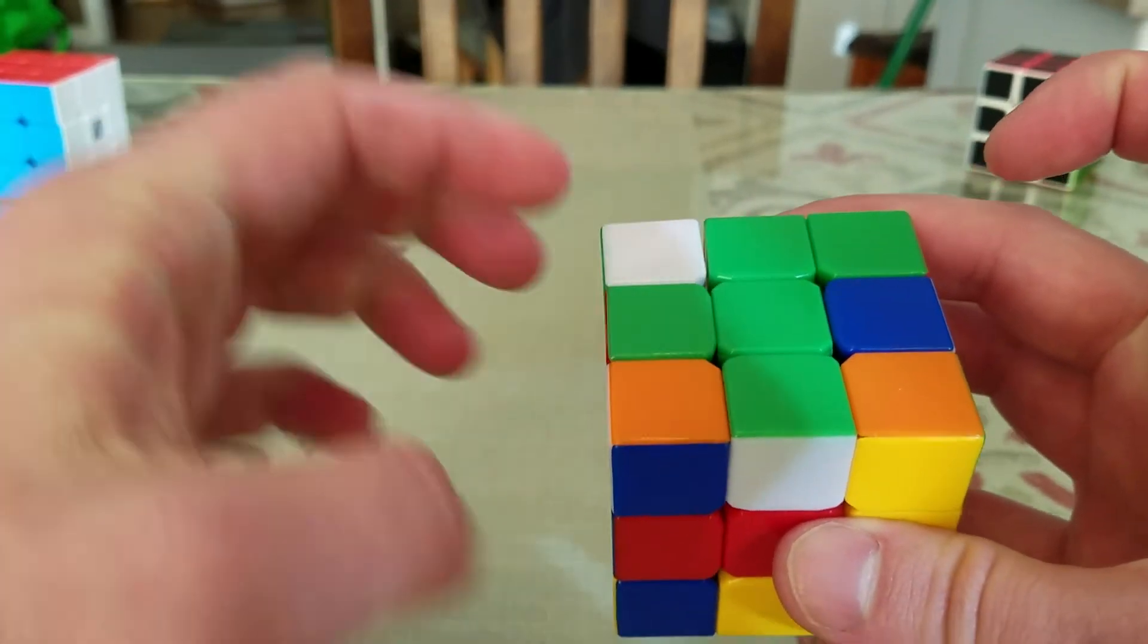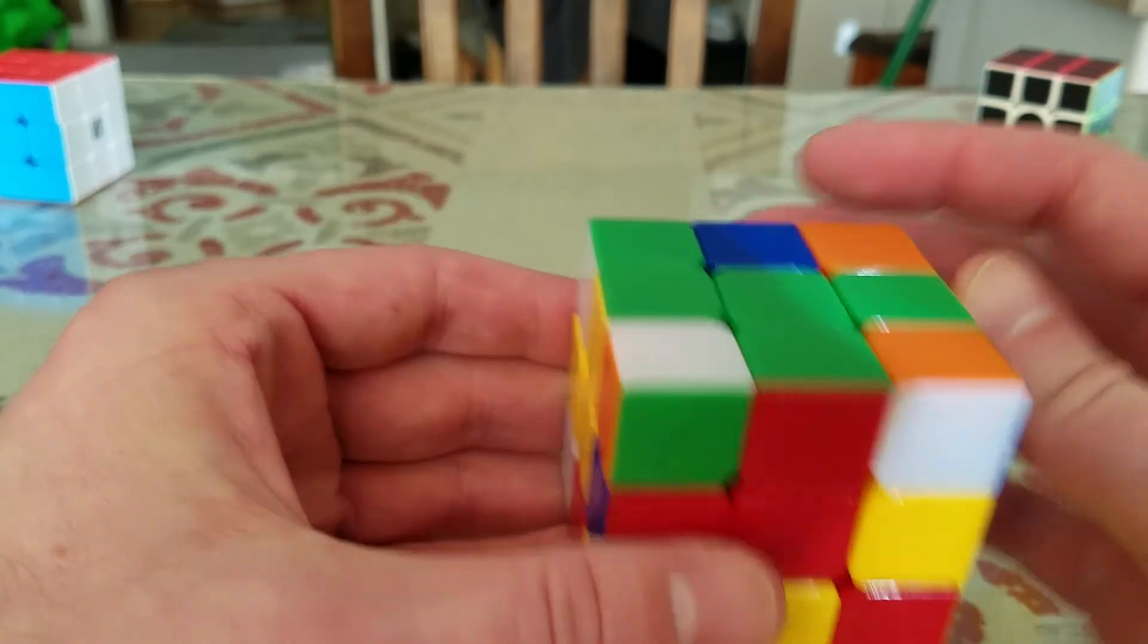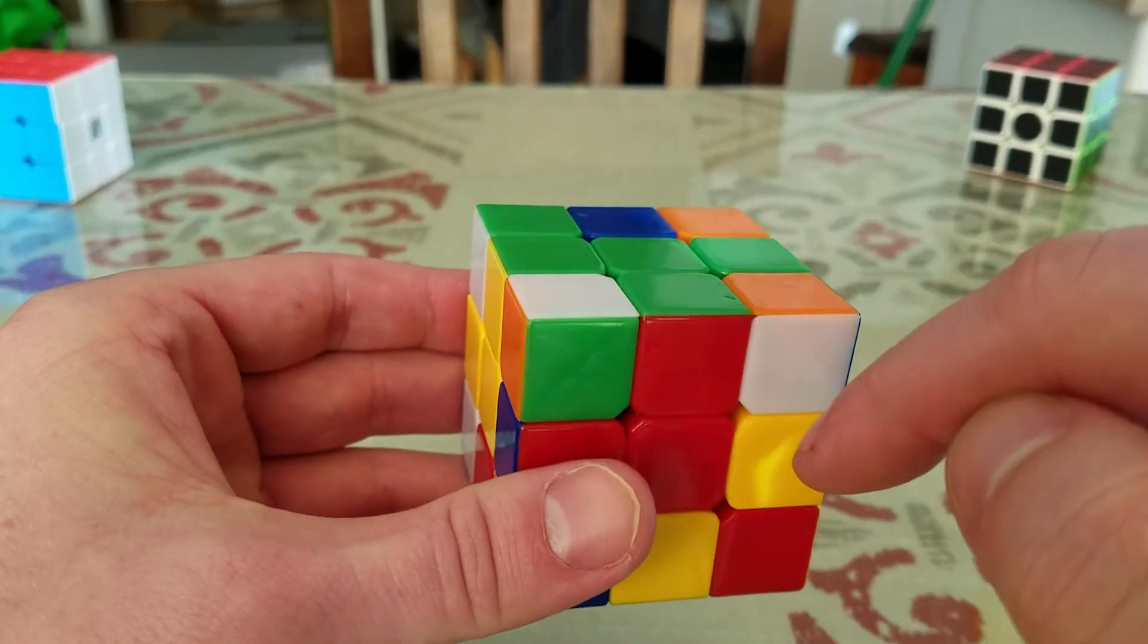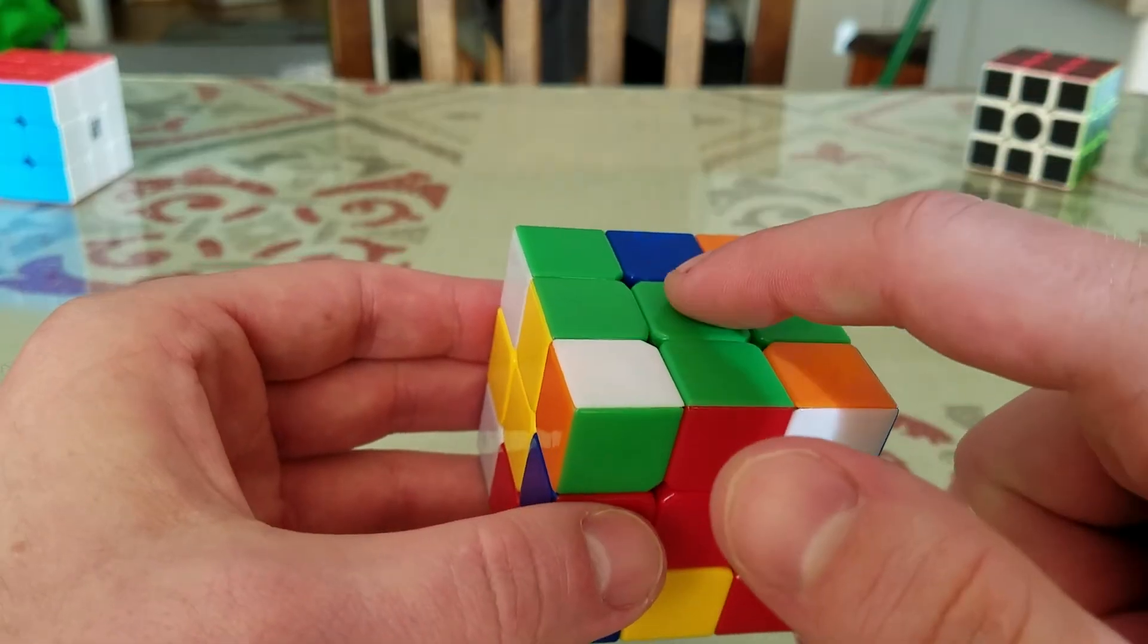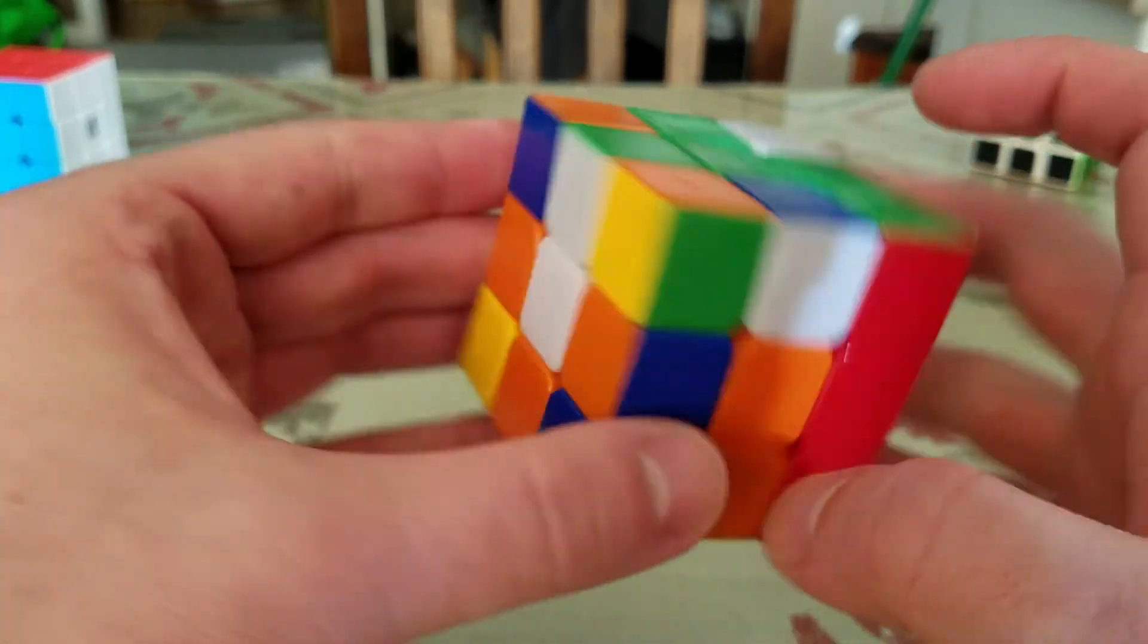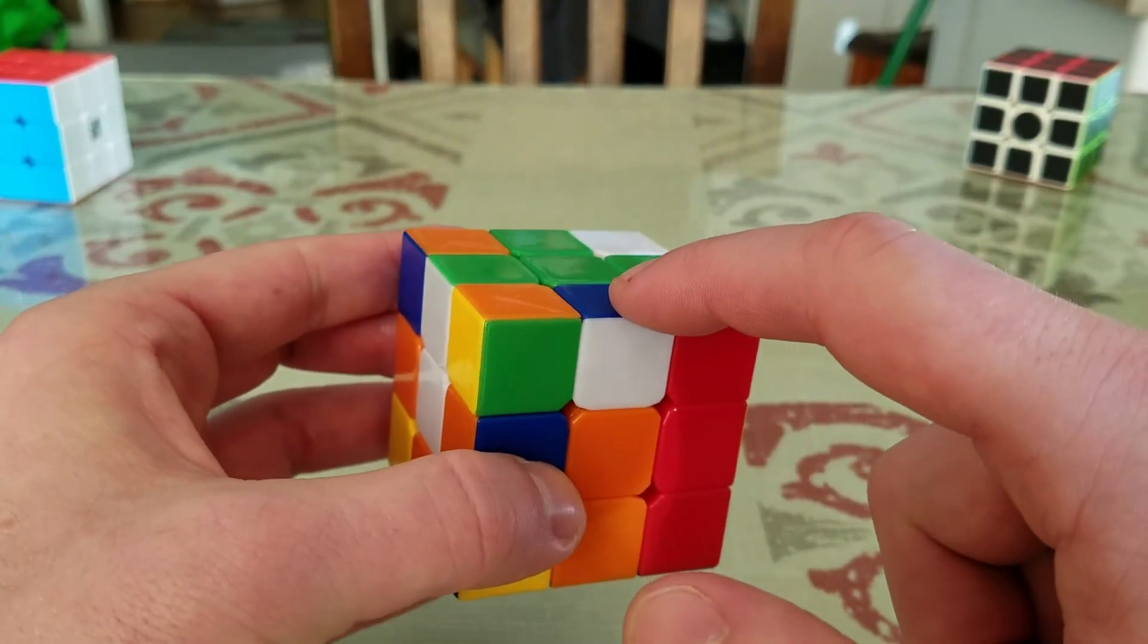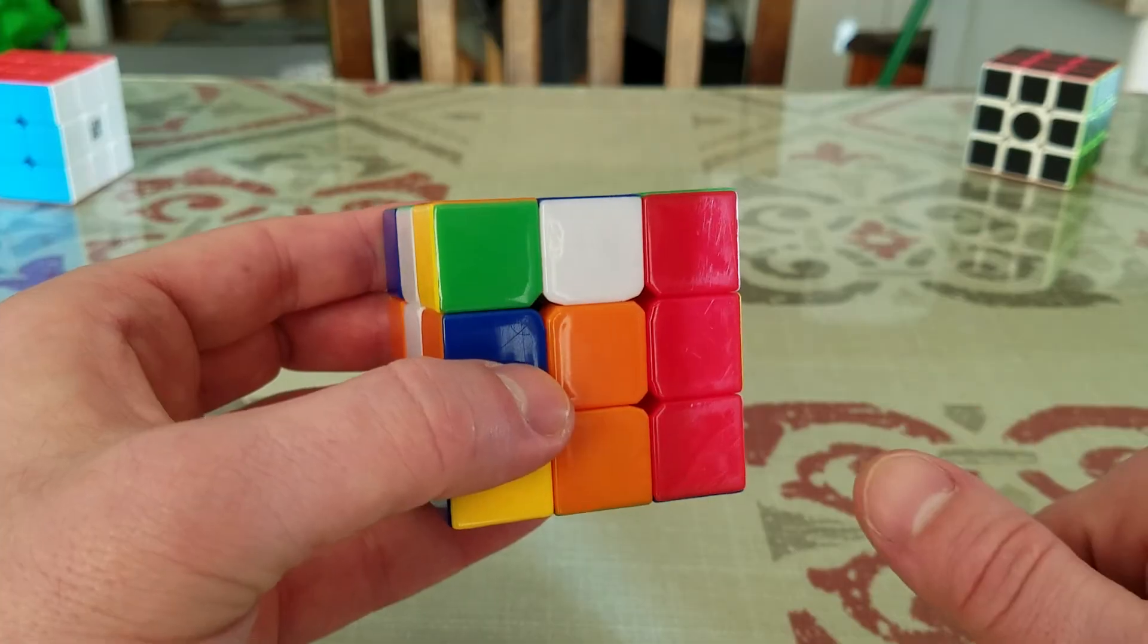And you'll notice that it's starting to look like a green cross. And now we're going to turn the top back. So now you'll see that this red and green piece is correctly oriented. We have green into red, green into yellow, green into white, and we have one last one to do, which is this green into orange.